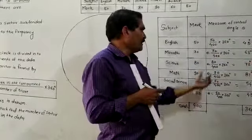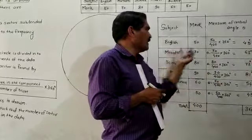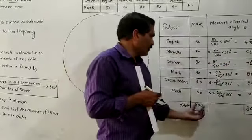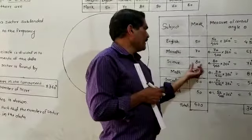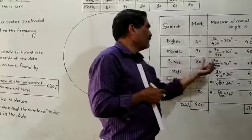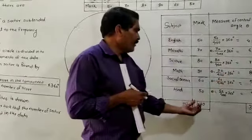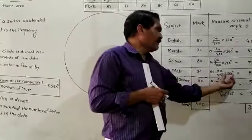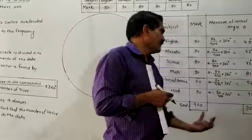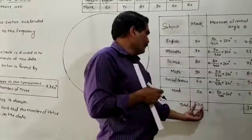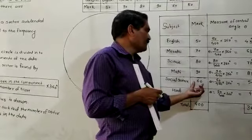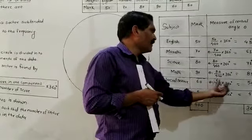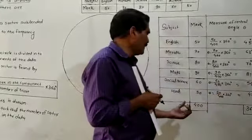Out of 400, 70 marks in Marathi: (70/400) × 360 = 63 degrees. Out of 400, 80 marks in Science: (80/400) × 360 = 72 degrees. Out of 400, 90 marks in Maths: (90/400) × 360 = 81 degrees. Out of 400, 60 marks in Social Studies: (60/400) × 360 = 54 degrees.